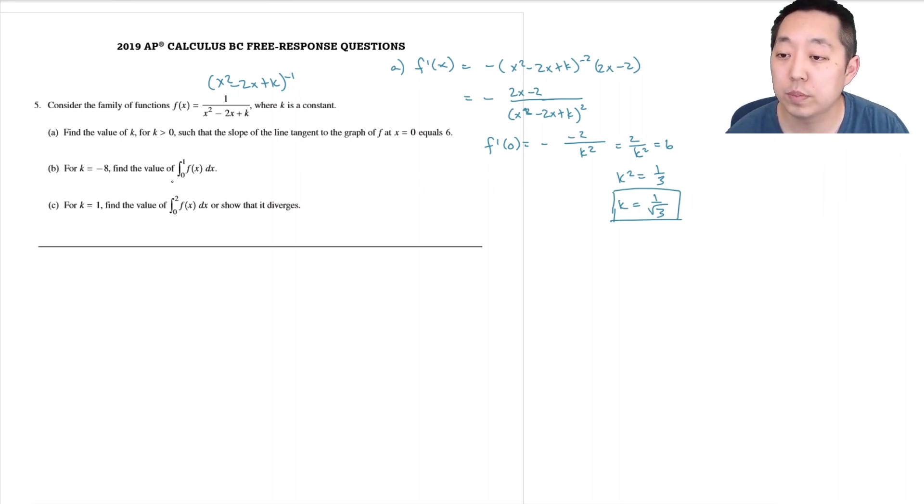Part (b): Find the value of the integral from 0 to 1 of f(x) dx, which is 1 over (x squared minus 2x minus 8) dx. For this one we want to factor this part here, so (x minus 4)(x plus 2).